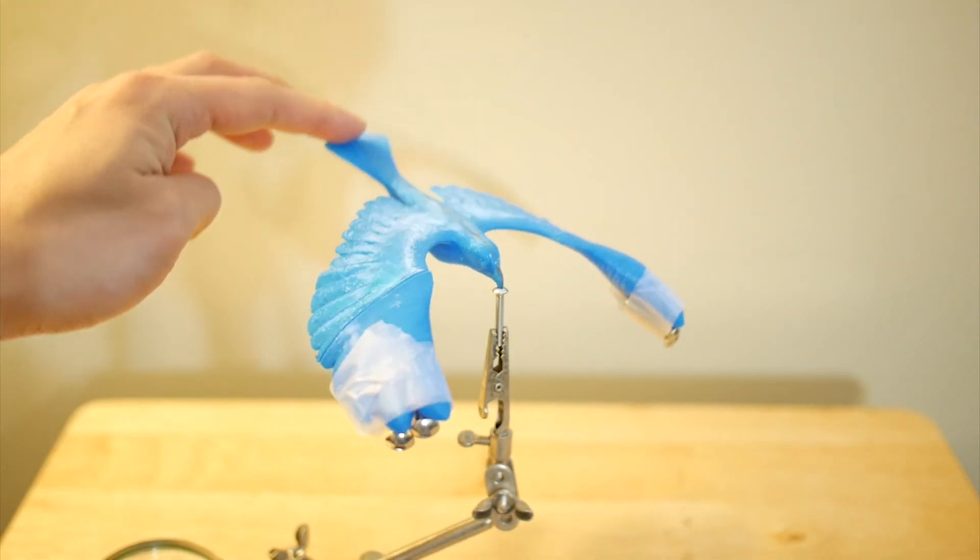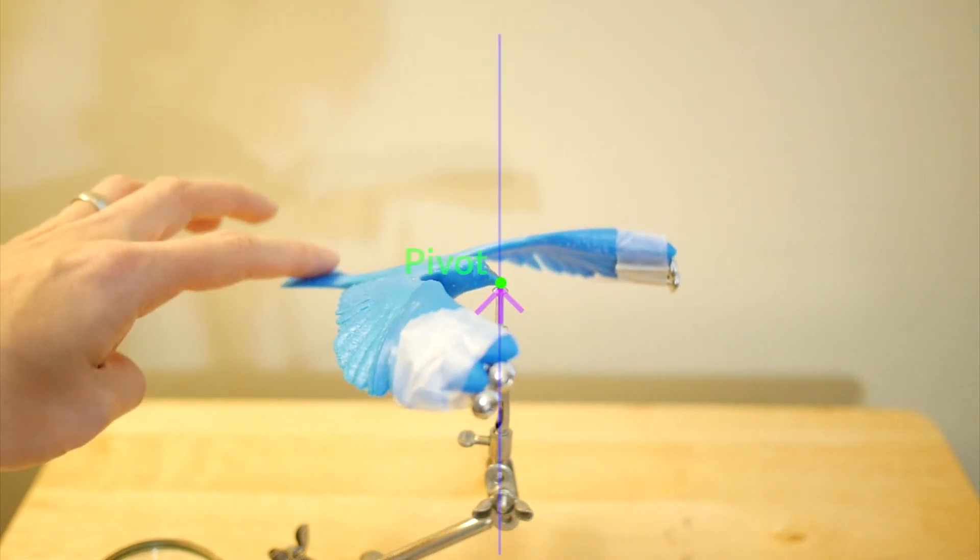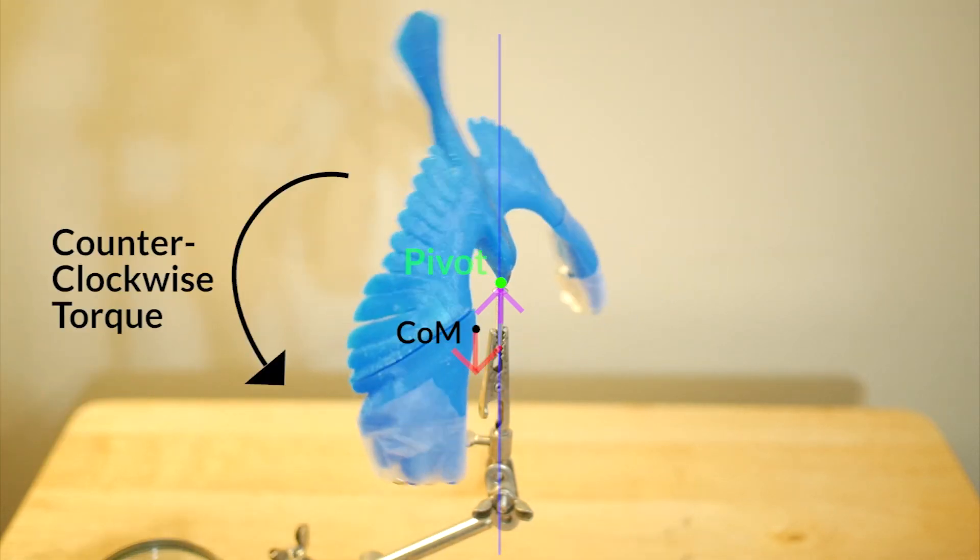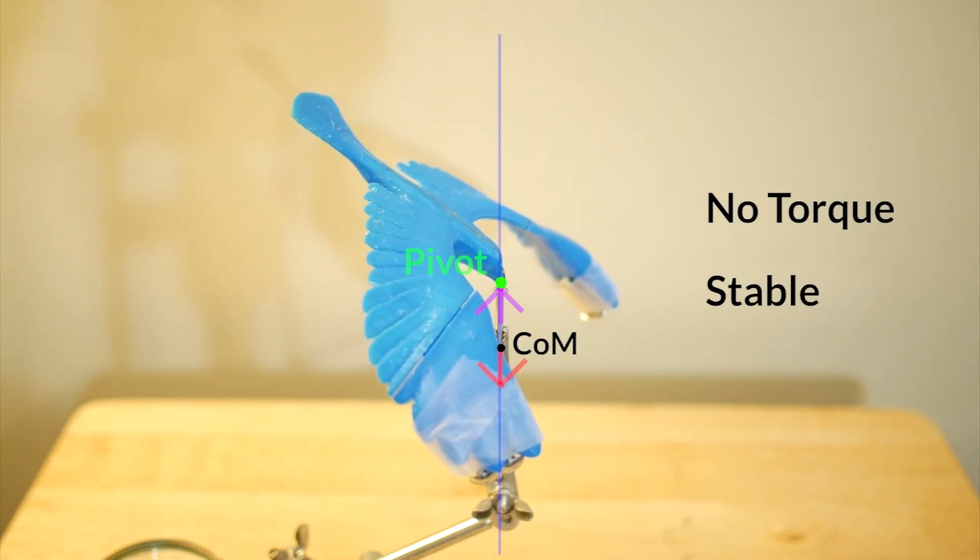If I push the tail downward like this, the gravity at the center of mass and the reaction force from the pivot point become misaligned. As a result, the clockwise torque is created. So if we let it go, it rotates clockwise as we expected. But now, the center of mass is located on the left side of the blue line, which creates a torque counterclockwise. So the bird keeps oscillating until these two forces align each other, and the rotation stops when there is no torque.